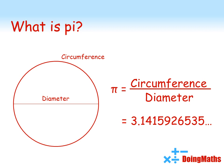The decimal places of pi go on to infinity, they never repeat. We call it an irrational number.